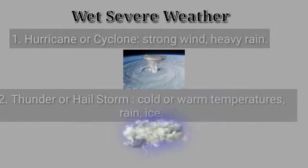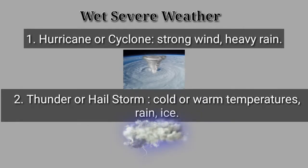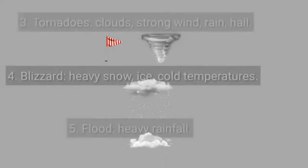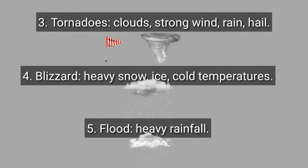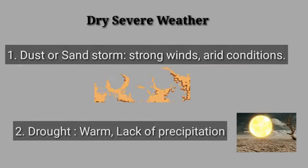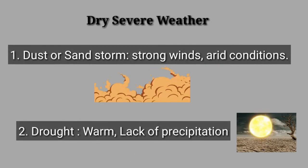Types of severe weather. Wet severe weather: 1. Hurricane or cyclone, 2. Thunder or hail storm, 3. Tornadoes, 4. Blizzard, 5. Flood. Dry severe weather: 1. Sand or dust storm, 2. Drought.